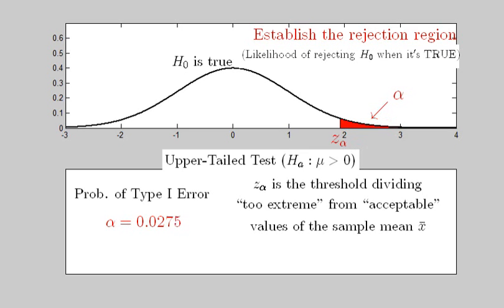The threshold dividing what is too extreme from what is acceptable is given by the value z sub alpha. As an example, consider an upper-tailed test in which the research or alternative hypothesis states that the population parameter is greater than the null hypothesized value. There are many possibilities for the location of this blue curve.